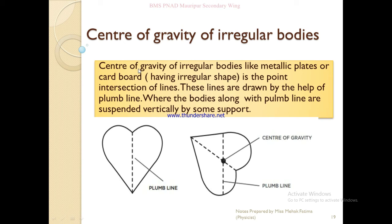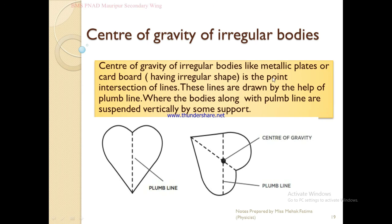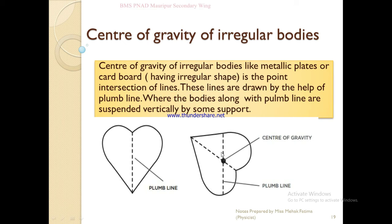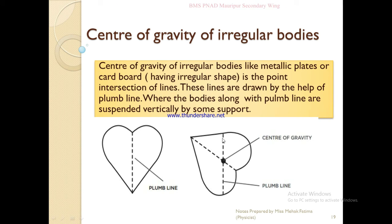For finding the center of gravity of irregular bodies — those without a defined geometrical shape — you need to use a different method. The center of gravity of irregular bodies such as metallic plates or cardboard with an irregular shape is found at the point of intersection of lines. These lines are drawn with the help of a plumb line. The body is suspended vertically by some support along with the plumb line, and a line is drawn.